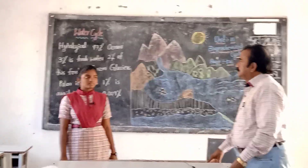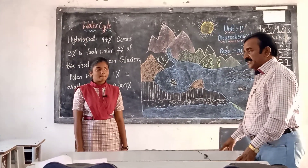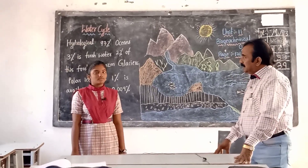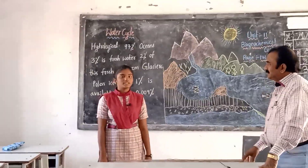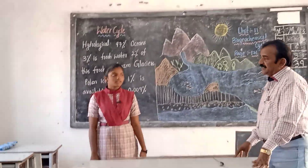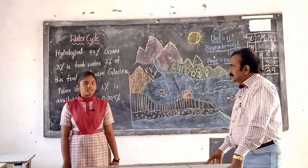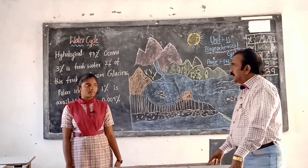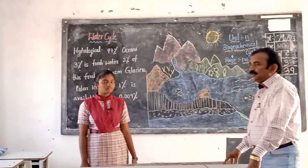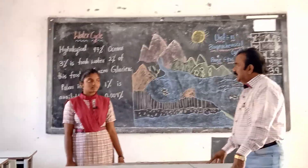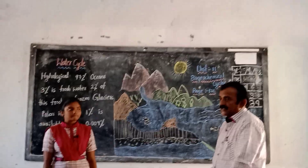During daytime, the sun heats the water. Then it evaporates and reaches the skies. They form as clouds - evaporation and transpiration take place. Later they get condensation, and finally precipitation gives us rain. That is the water cycle.